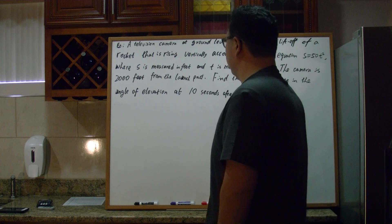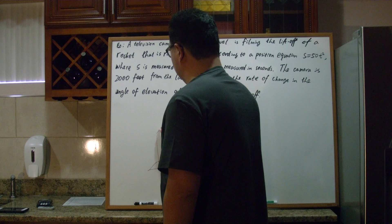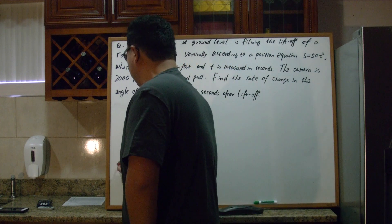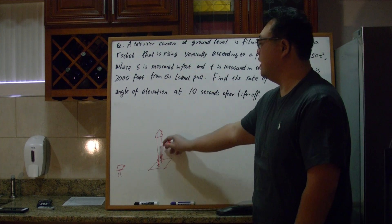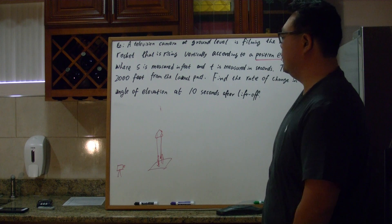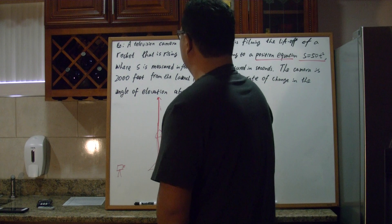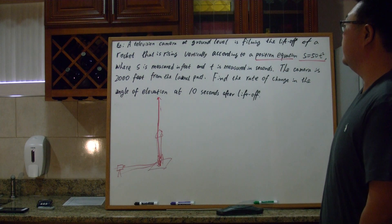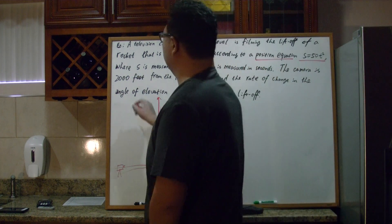Question: a television camera at ground level is filming the lift-off of a rocket. So we have a launch pad, we have a rocket, and that's a camera which is filming it. The rocket goes up after launching, and then the position equation is S equals 50T squared. S is in feet, where T is in seconds. And the camera is 2,000 feet away from the launch pad.